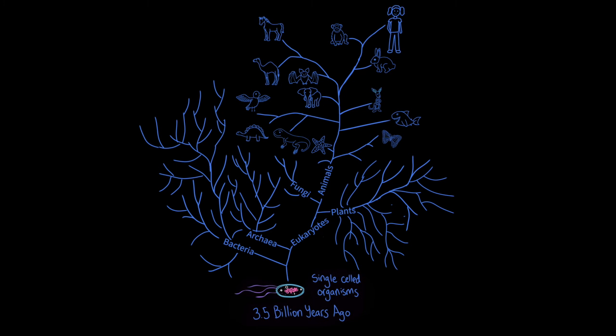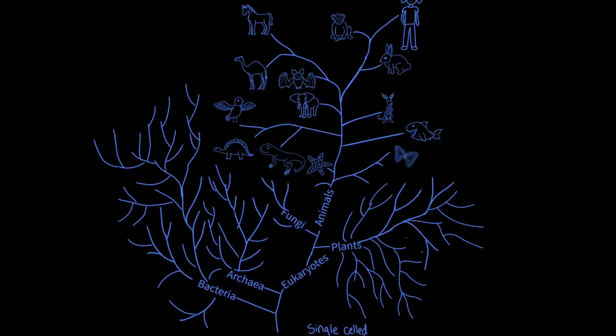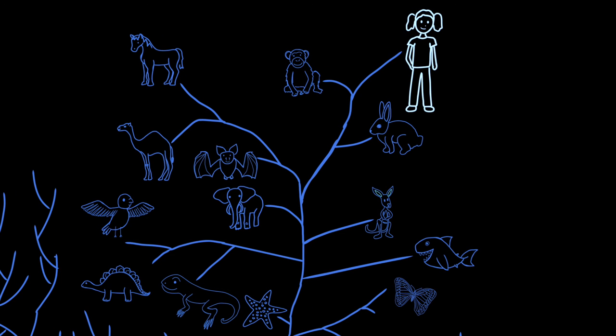And eventually, the vast diversity of modern organisms evolved. Some organisms share a more recent common ancestor than others do. Scientists have found evidence that we humans are more closely related to chimpanzees than we are to rabbits, and we're more closely related to rabbits than we are to sharks.